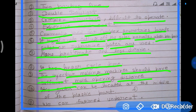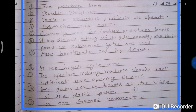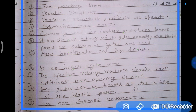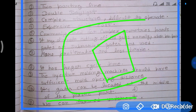The three-plate mold has a longer cycle time compared to the two-plate mold. The injection molding machine must have sufficient mold opening distance. In the three-plate mold, the gate can be located at the middle of the plastic part.